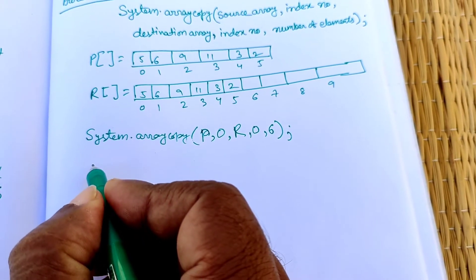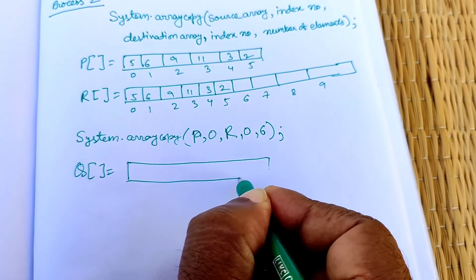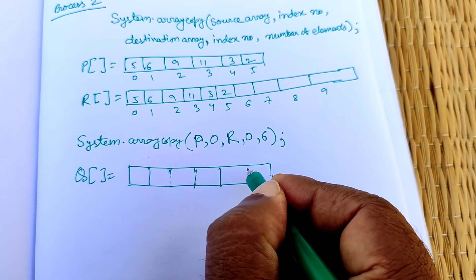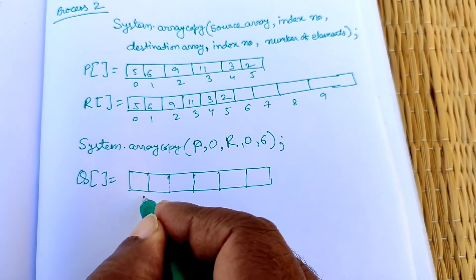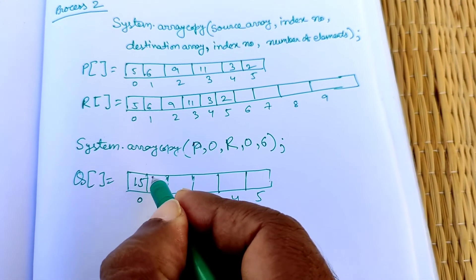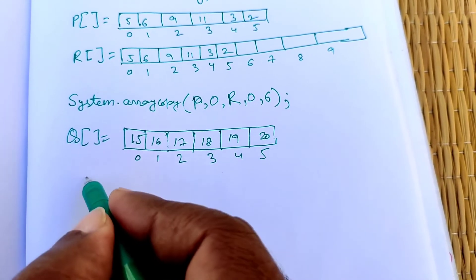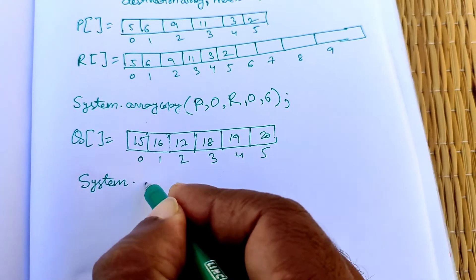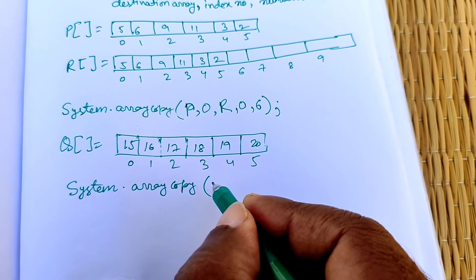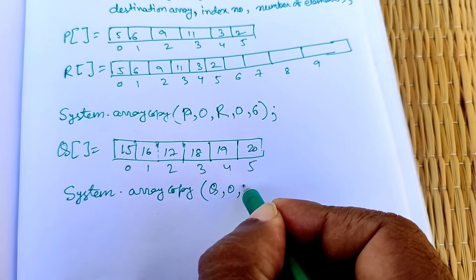For the second array q, which also has 6 elements — suppose 15, 16, 17, 18, 19, and 20 at index positions 0 through 5 — we write a second System.arraycopy call with source q and destination r.